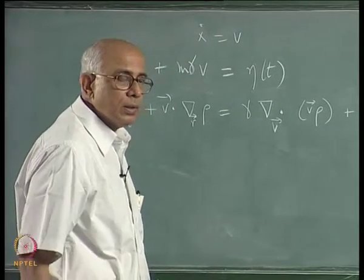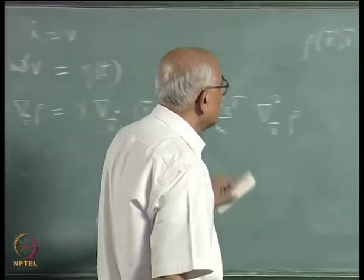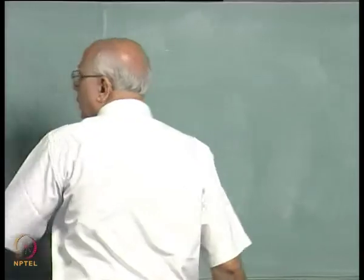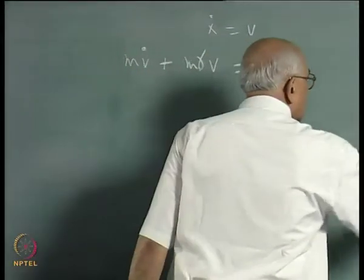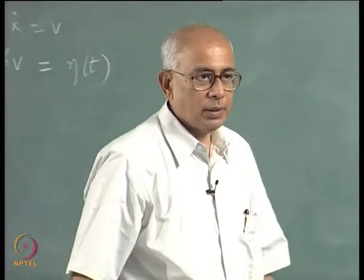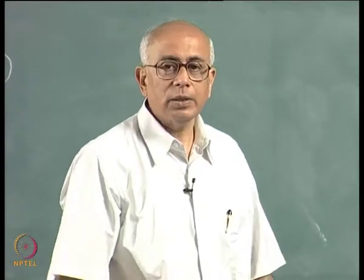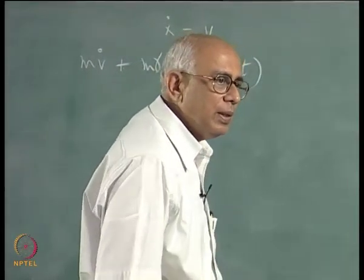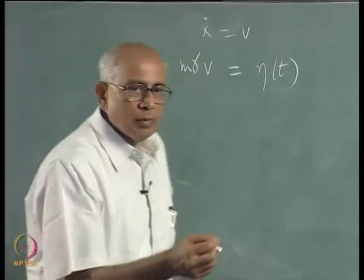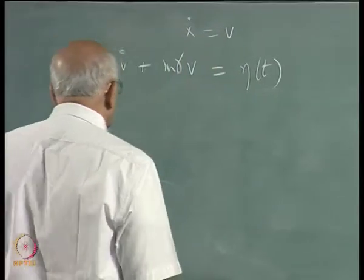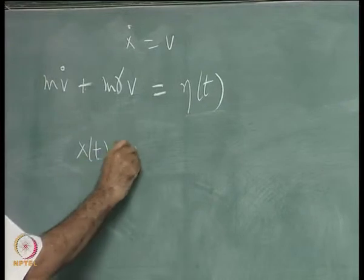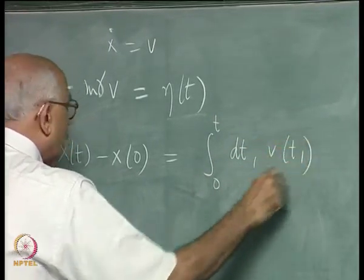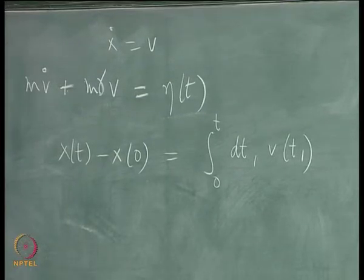Going back to the Langevin equation, we ask what we can say about the position of the particle. We know the conditional density of velocity is given by the Ornstein-Uhlenbeck distribution. We can start with the particle at the origin at t=0 and find that x(t) – x(0) = ∫₀ᵗ v(t₁) dt₁. Let us call this Δx(t).